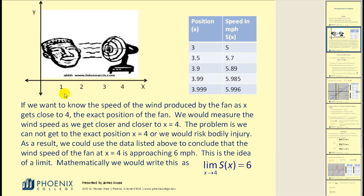Let's say, for example, you're at position one, and there's a fan at position four. If you want to know the speed of the wind produced by the fan as x gets close to four — the exact position of the fan — we would measure the wind speed as we get closer and closer to x equals four. The problem is we cannot get to the exact position x equals four, or we would risk serious bodily injury. As a result, we could use the data listed above to conclude that the wind speed of the fan at x equals four is approaching six miles per hour.